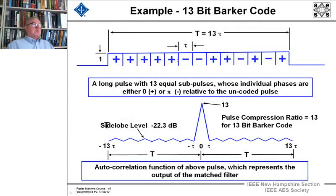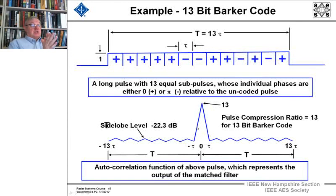A 13-bit Barker code is probably the most used because it gives you quite good side lobes. Excuse me for this typo where I have a capital T overlapping 'side lobe level' — I'll change that in the PDFs. Here is the code for a 13-bit Barker code. It gives you pretty good side lobes: 22.3 dB side lobes and a pulse compression ratio of 13. So you can get 13 dB better resolution and get 22.3 dB side lobes. The auto-correlation of the above pulse represents the output of the matched filter.